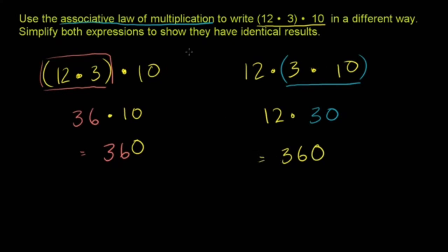So it didn't matter how we associated the multiplication. You could do the 12 times 3 first, or you could do the 3 times 10 first. Either way, they both evaluated to 360.